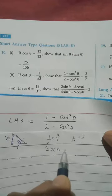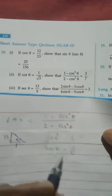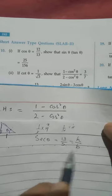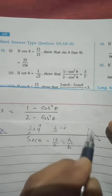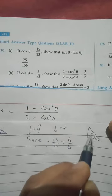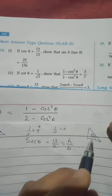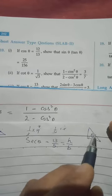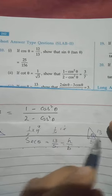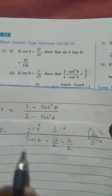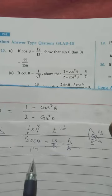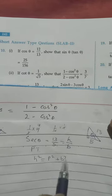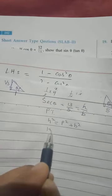Next, number 3: we have sec θ = 13/5. The definition of sec is h/b, which means h = 13 and b = 5. Drawing the right triangle with θ in the acute angle, the base near θ is 5, and the hypotenuse opposite to 90° is 13. We find the perpendicular using Pythagoras theorem: h² = p² + b².